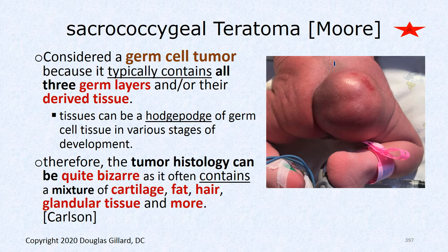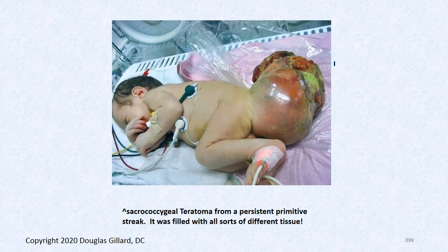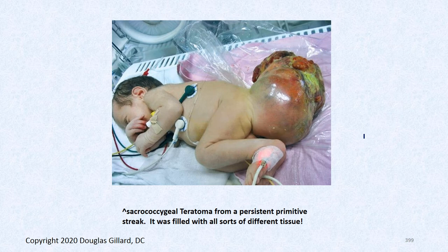There is overlap in timing — neurulation, mesoderm differentiation, and gastrulation can all be occurring simultaneously in different parts of the embryo. A lot of these stories can be going on at the same time.